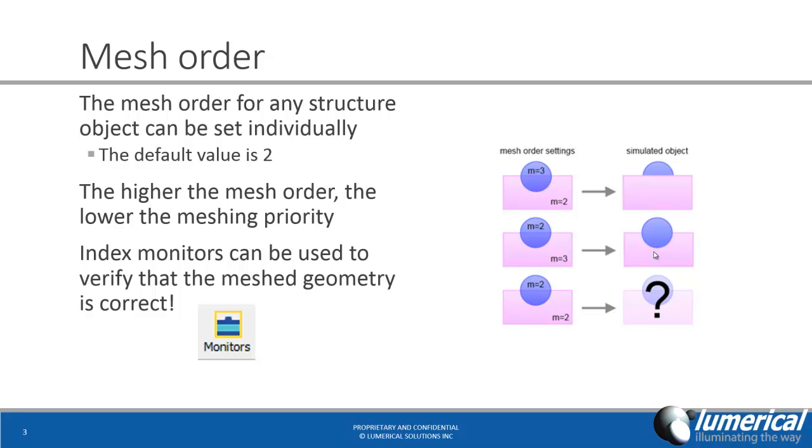And the best way to make sure that you've set the mesh order properly is to use an index monitor. The index monitor will return the permittivity as a function of space, and this is what the simulation will actually use.